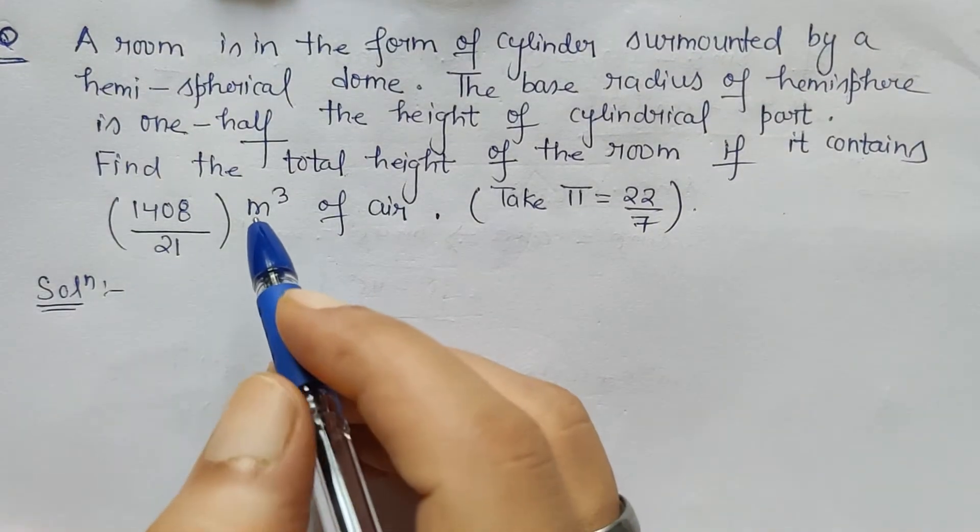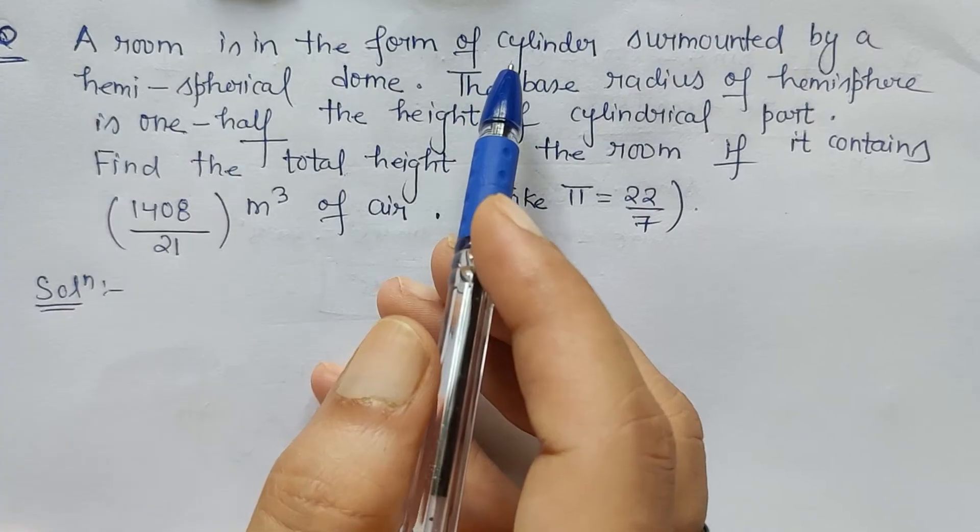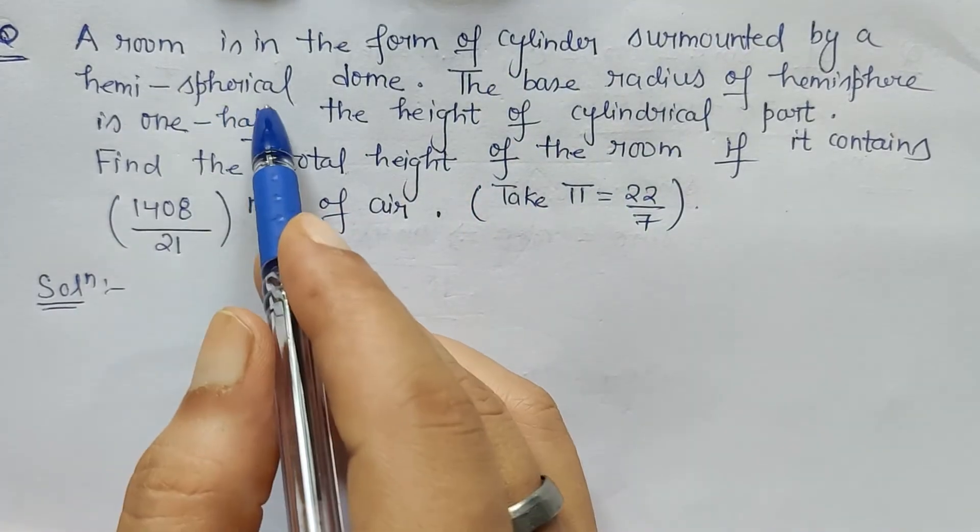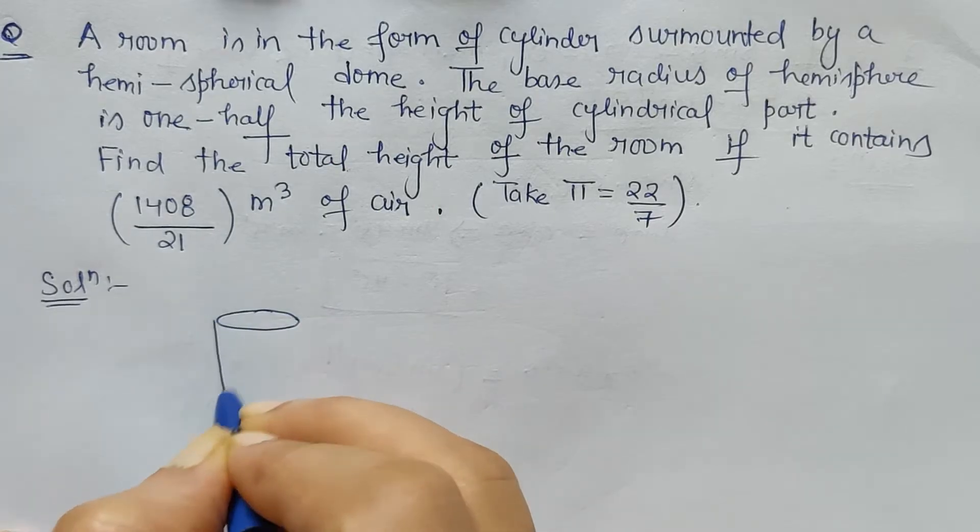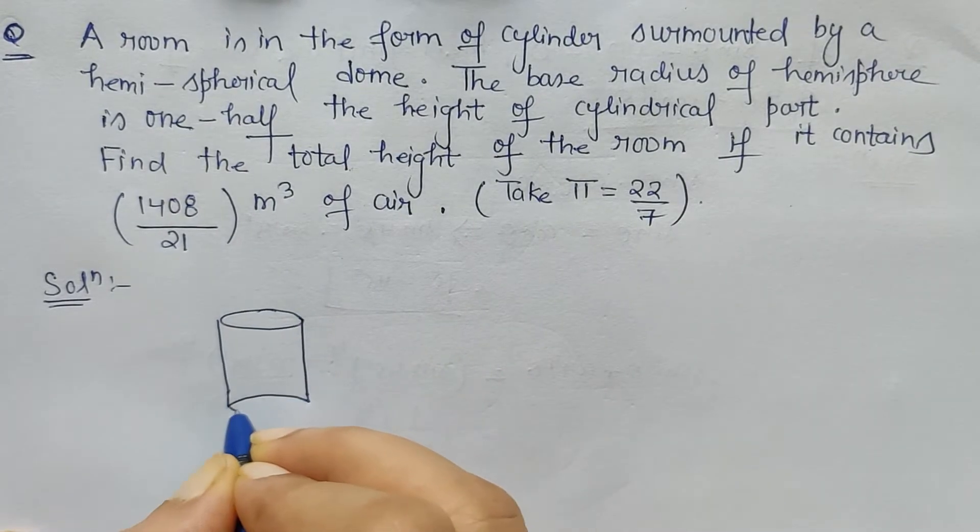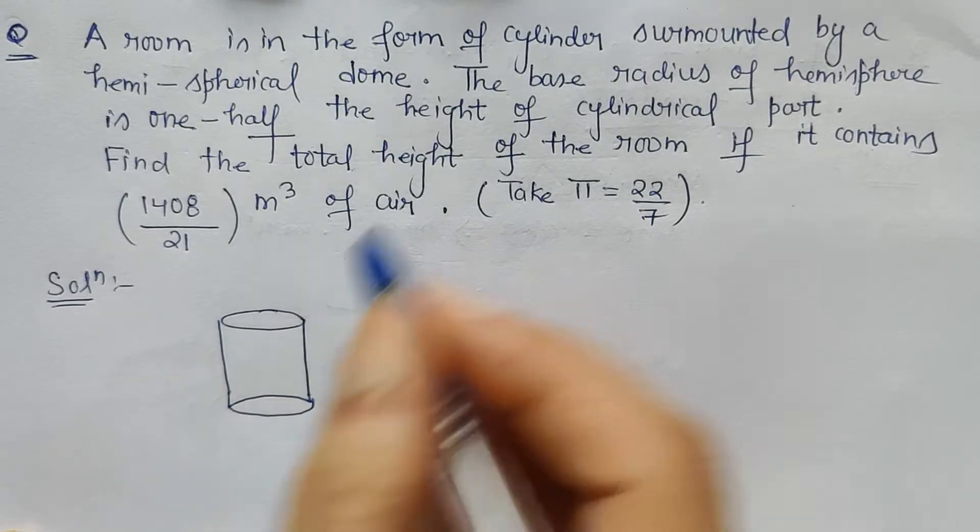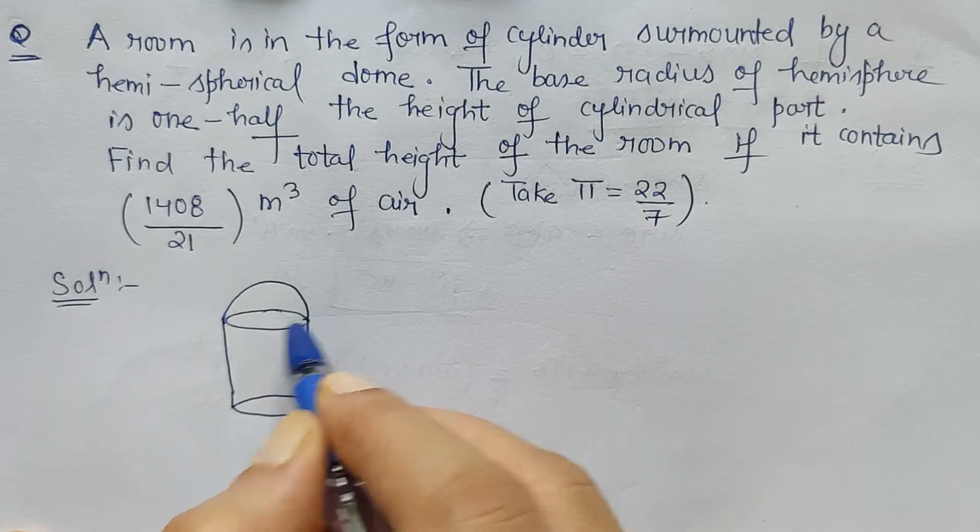Hello friends, in this question we have to solve a problem where a room is in the form of a cylinder surmounted by a hemispherical dome. So first we draw a cylinder because the shape of the room is like a cylinder surmounted by a hemispherical dome, that means a hemispherical dome is just above the cylindrical part.